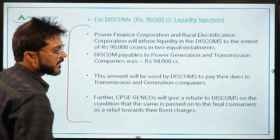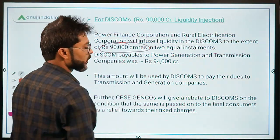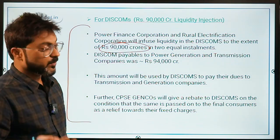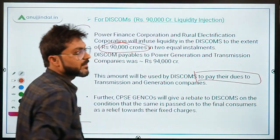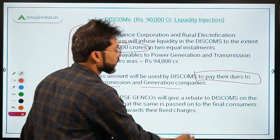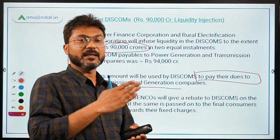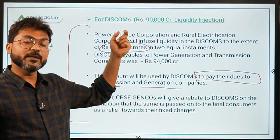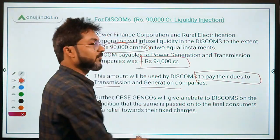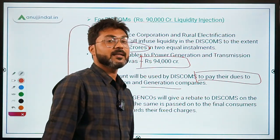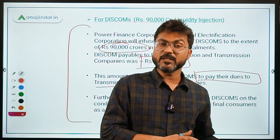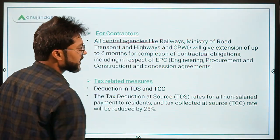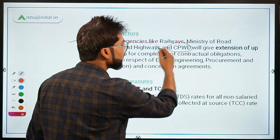For power distribution companies, ₹90,000 crore was provided so they could pay their dues to transmission and generation companies. At that time, the estimated dues of distribution companies to generation and transmission companies were approximately ₹94,000 crore. For central agency contractors like Railways, Ministry of Road Transport and Highways, and CPWD, the project deadline was extended by up to 6 months.